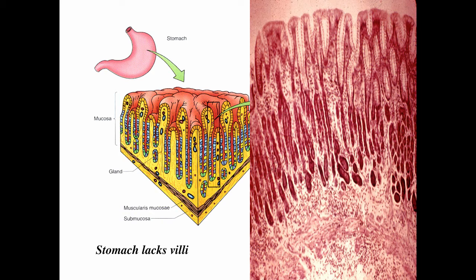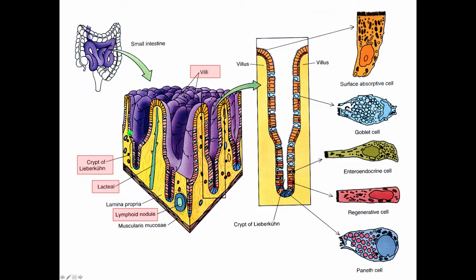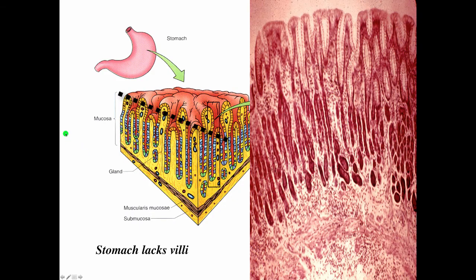Remember, the stomach lacks villi. An easy way to differentiate the small intestine from the stomach in the laboratory is to draw an imaginary line at the luminal surface. In the small intestine, villi project above that line into the lumen. On the stomach, despite the rugae, nothing projects above that imaginary line into the lumen — as there is in the small intestine.